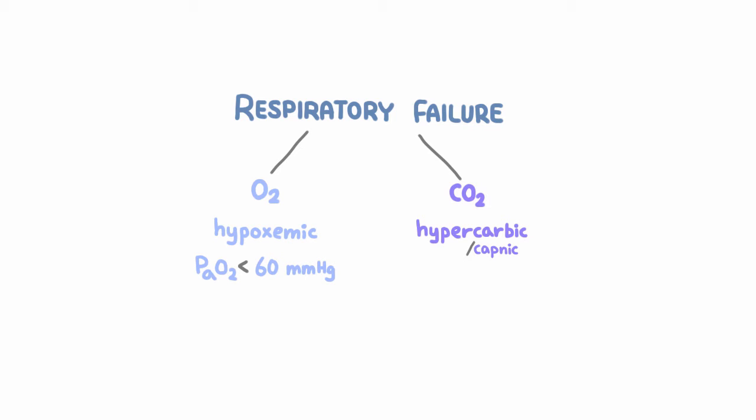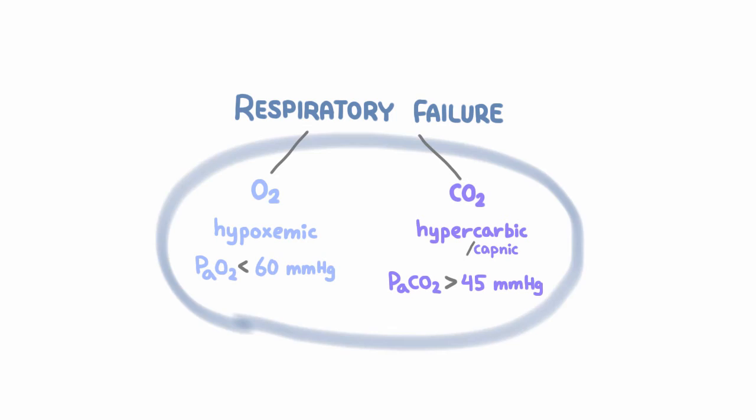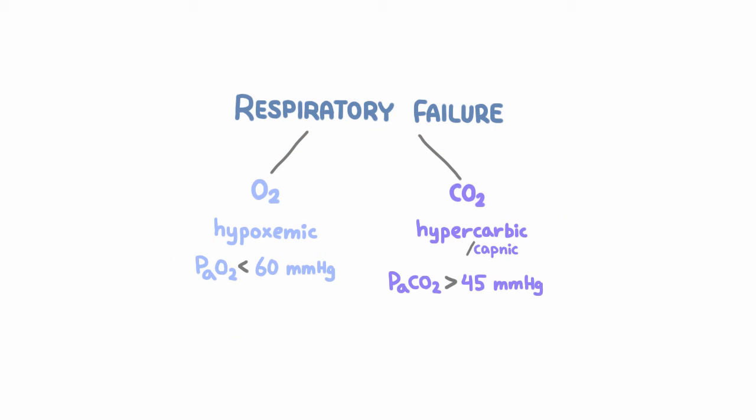In contrast, patients with hypercapnic respiratory failure have an increase in carbon dioxide in the blood, or hypercapnia, which is usually defined as starting when the arterial partial pressure of carbon dioxide is greater than 45 millimeters of mercury. Many patients may have a combined condition with both hypoxemia and hypercarbia.